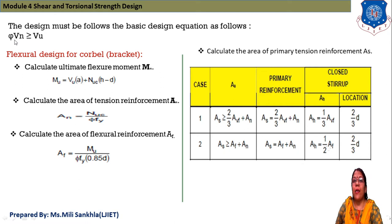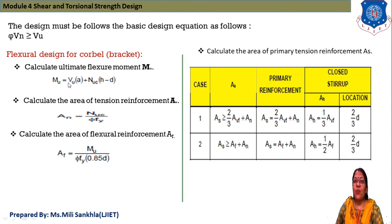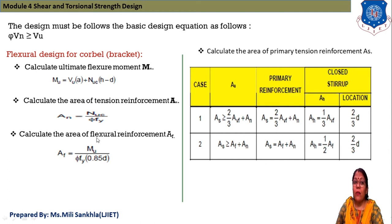The design must follow the basic equation: phi × VN ≥ VU. For flexural design of corbel or bracket, calculate the ultimate flexural moment MU = VU × a + NUC × (H − D). Then, area of tension reinforcement AN = NUC / (phi × Fy), and area of flexural reinforcement AF = MU / (phi × Fy × 0.85D).